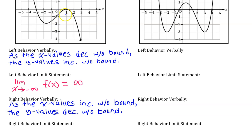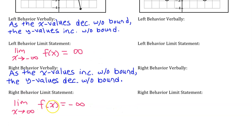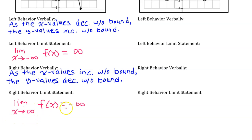To capture the idea that f of x falls on the right, we would say: as the x values increase without bound, the y values decrease without bound. Using limit notation, the limit as x approaches infinity of f of x equals negative infinity. This part means as the x values increase without bound, and this part means the y values decrease without bound.